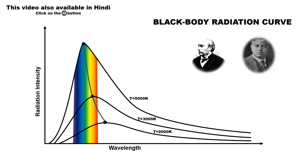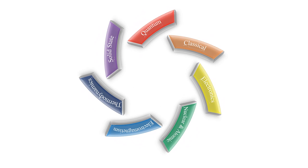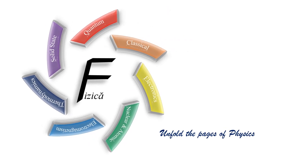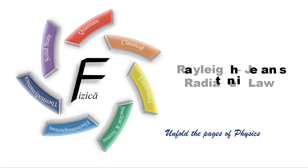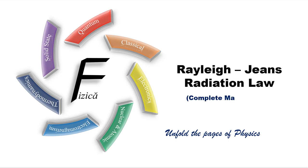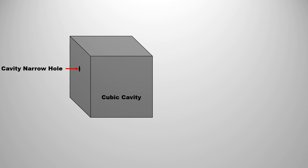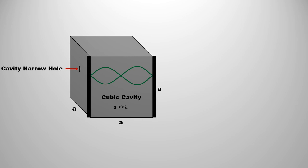To explain the blackbody radiation curve from Rayleigh-Jeans law, consider a large cubic cavity of length A. The length of the cavity should be greater than the maximum wavelength of the radiation, so that radiation of all wavelengths will be confined between the walls of the cavity. In Rayleigh-Jeans law, it has been considered that radiation forms standing waves inside the cavity. The wall of the cavity should be such that it can confine the standing waves of the radiation inside.